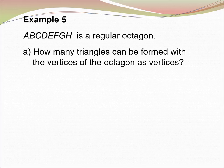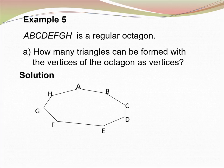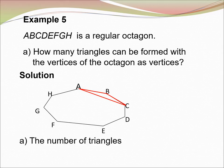Example 5. ABCDEFGH is a regular octagon. (a) How many triangles can be formed with the vertices of the octagon as vertices? To form a triangle, we need 3 vertices. So, the number of triangles is 8C3 equal to 56.